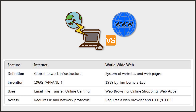In terms of uses, the internet covers email, file transfer, and online gaming, while the worldwide web covers web browsing, online shopping, and web apps. For access, the internet requires IP and network protocols, while the worldwide web requires a web browser and HTTP or HTTPS.